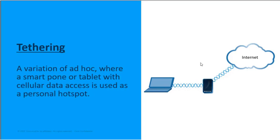There's also tethering, which can be considered an extra mode. With tethering, you have a cell phone or tablet with cellular data access connecting to cellular internet, but that cellular device is also running as an access point — a hotspot. Wireless PCs, tablets, and other devices connect to that phone or tablet as a wireless router, and non-cellular devices can then access the internet through it via peer-to-peer.